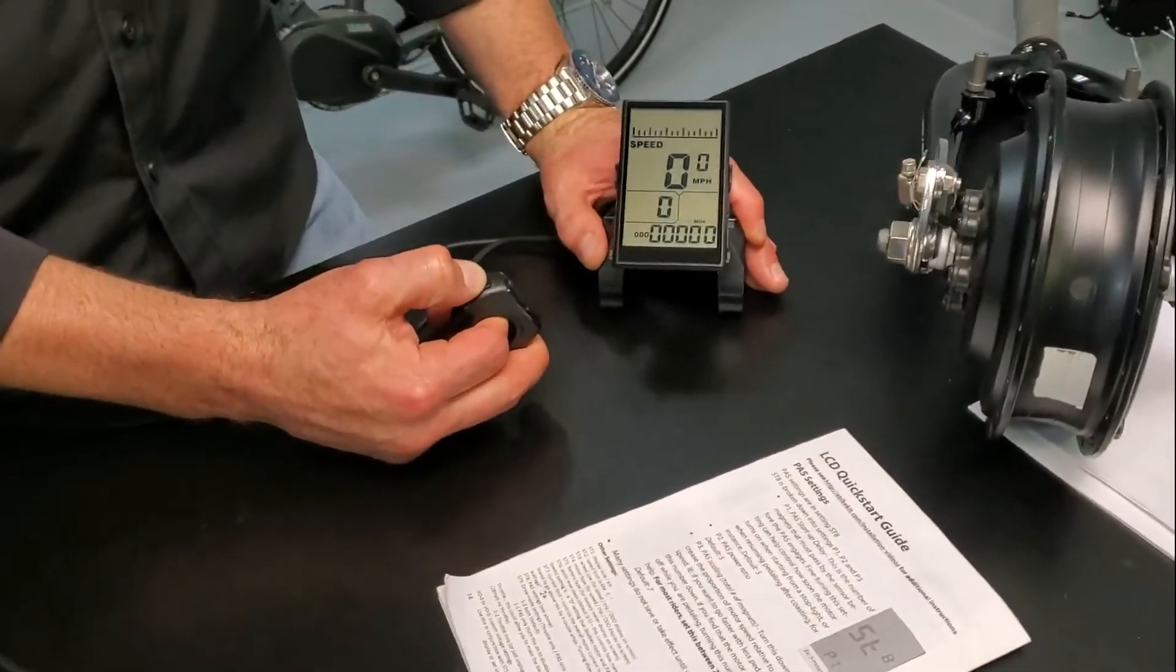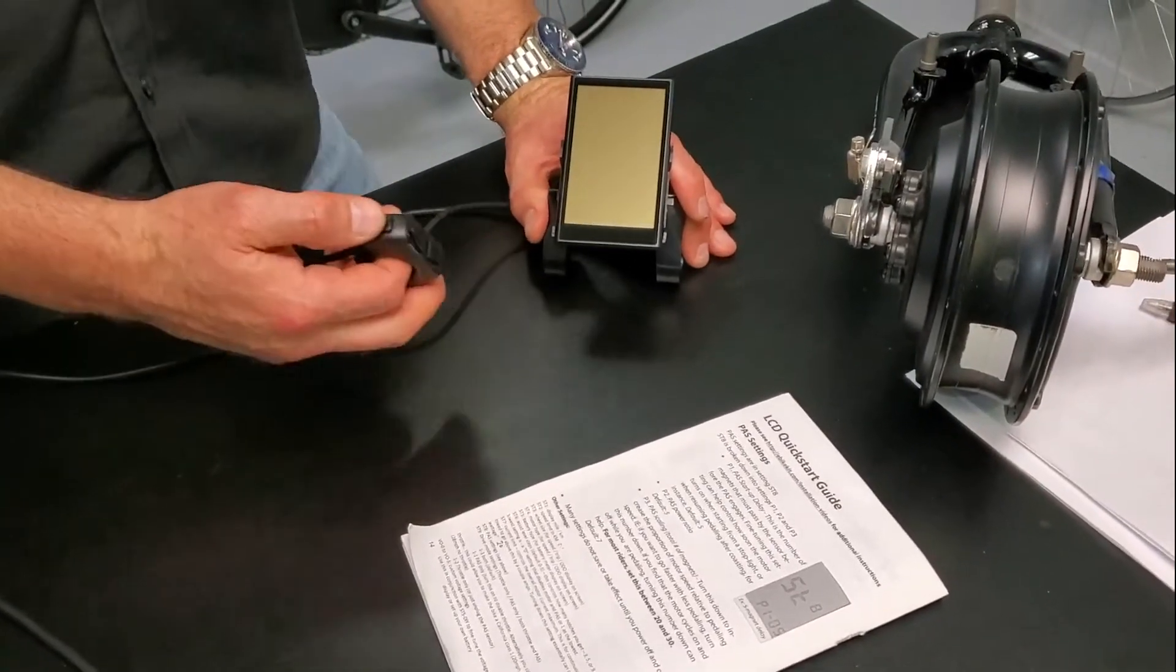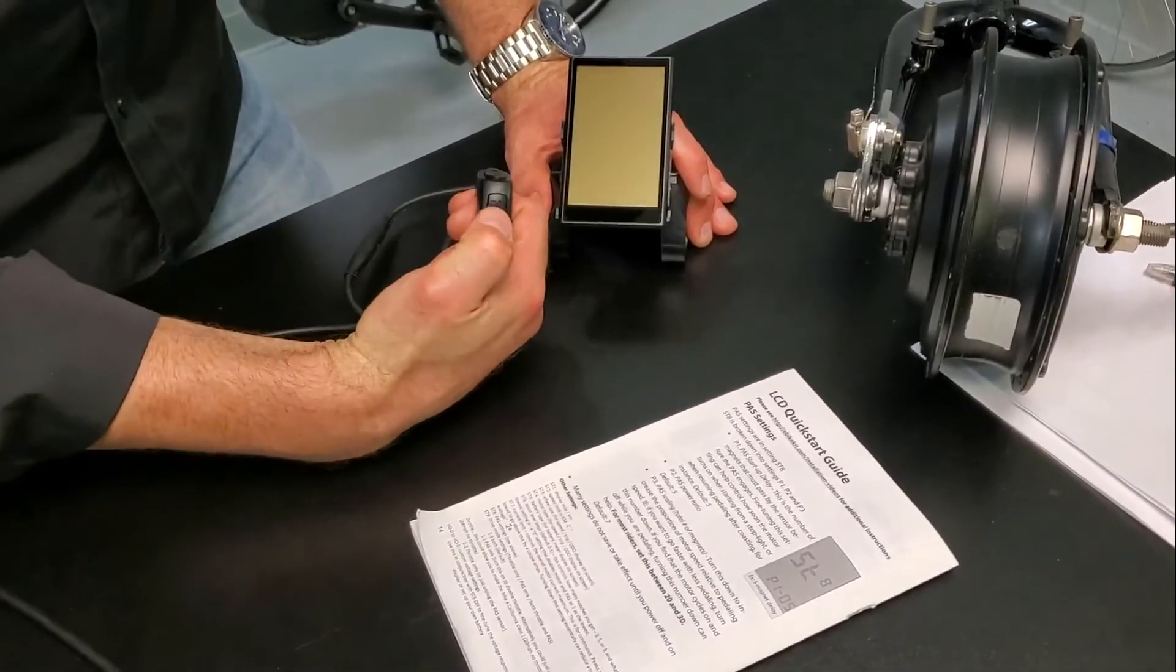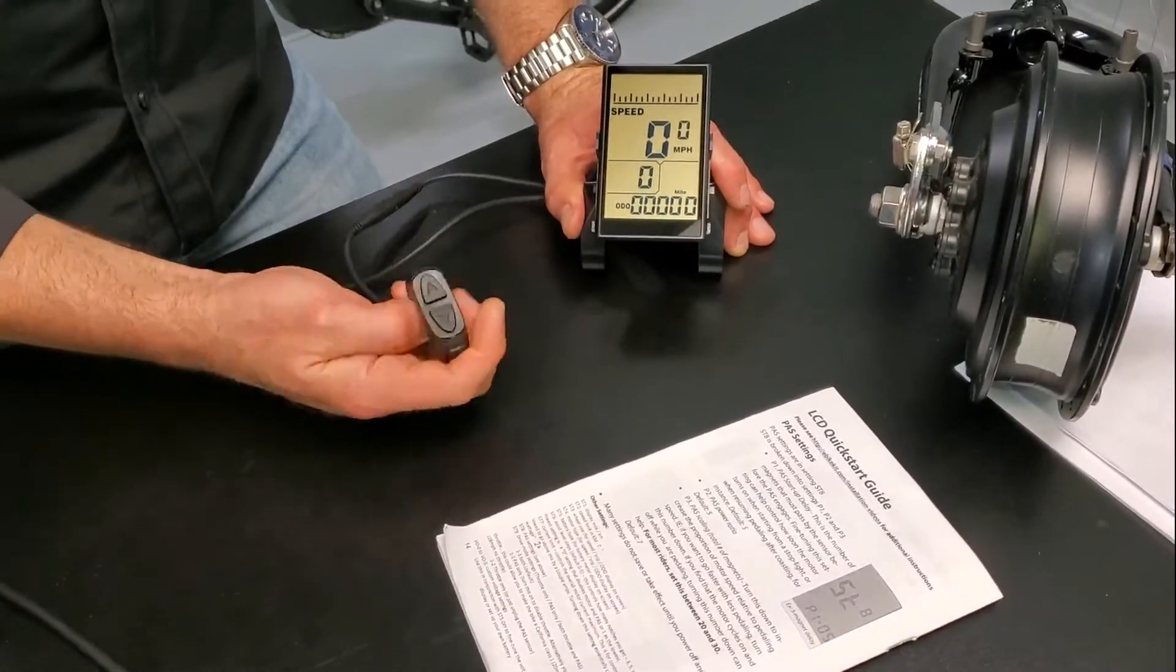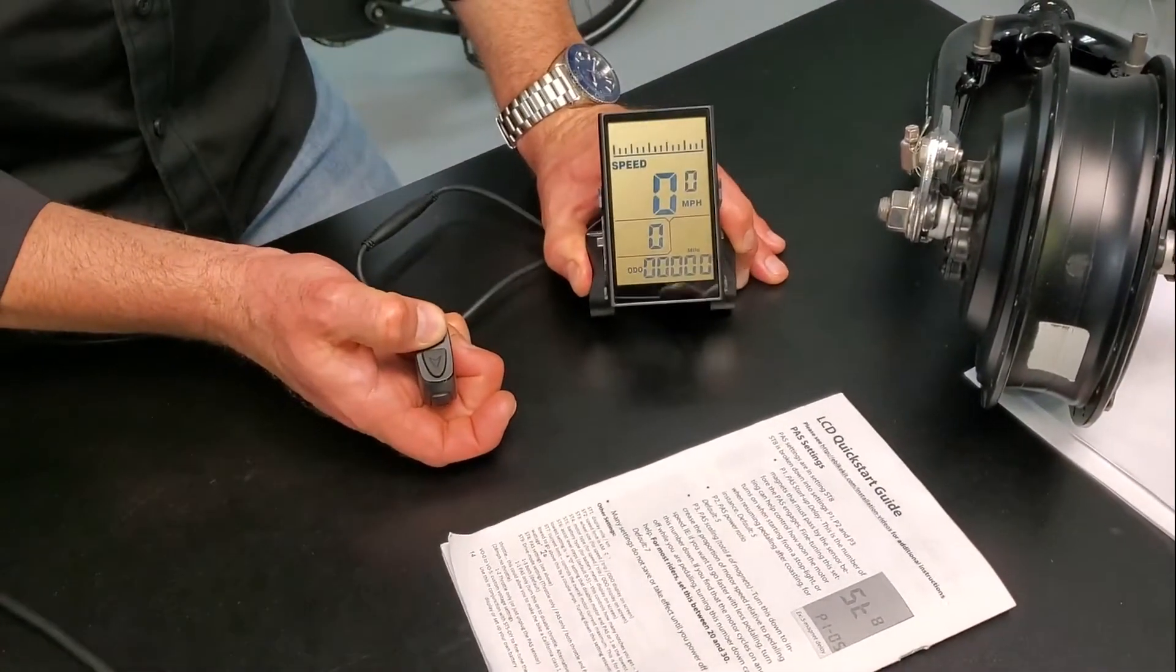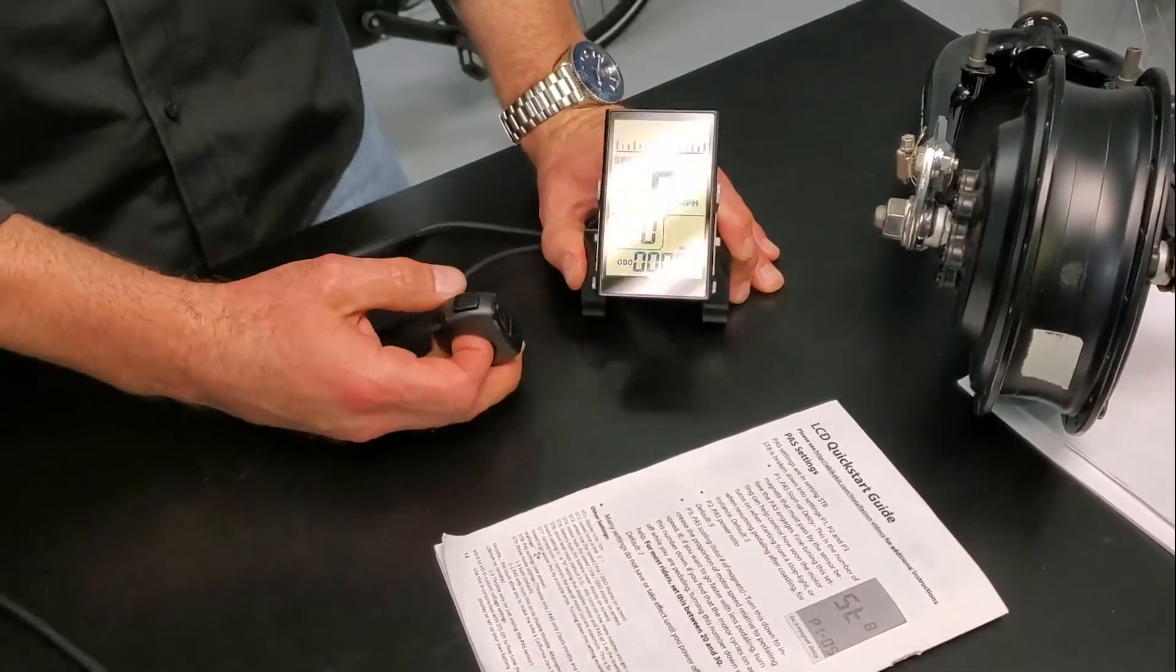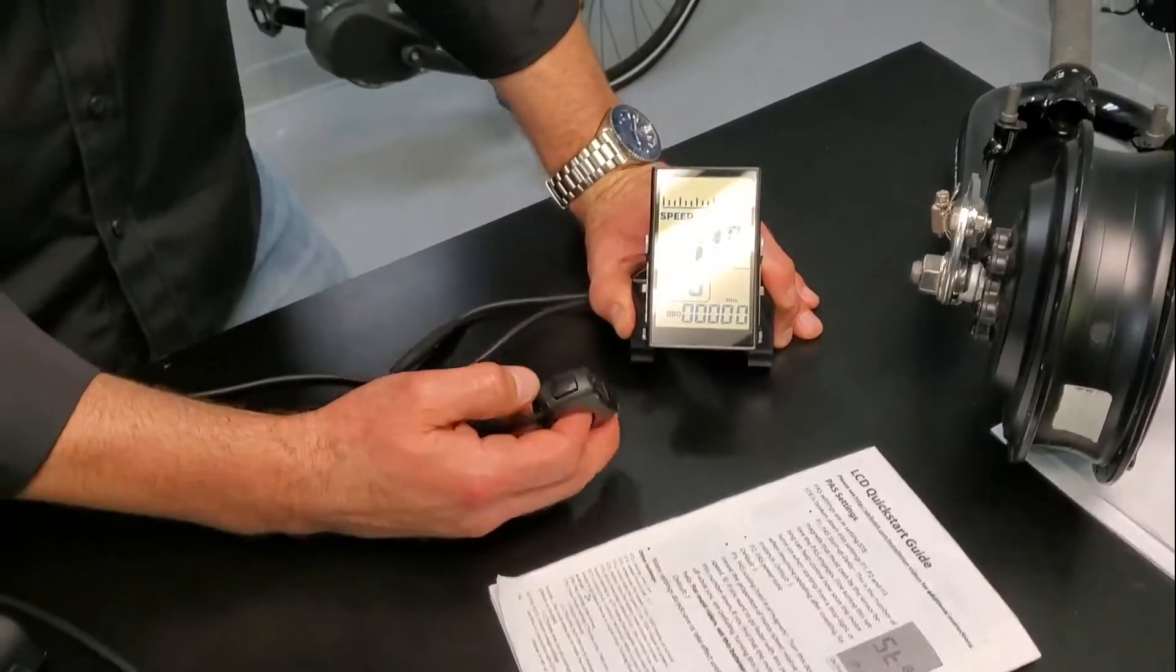So we have our LCD here. This is our no-key model from 2017 through 2020. We're going to turn it on by pressing that M right there. Quick press, it comes on. We can hold the up arrow to get a backlight if we need a little bit of illumination. You can see here this is a brand new LCD.